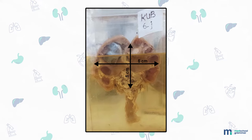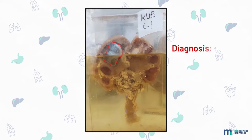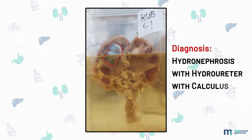Specimen of kidney with 5 centimeter length of ureter. Kidney is 6 by 5 by 2 centimeter. External surface nodular. Cut surface shows markedly dilated pelvicalyceal system, large calculus seen, ureter dilated. Diagnosis: hydronephrosis with hydroureter with calculus.